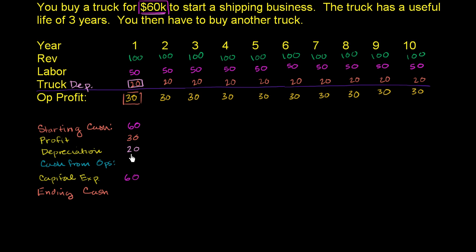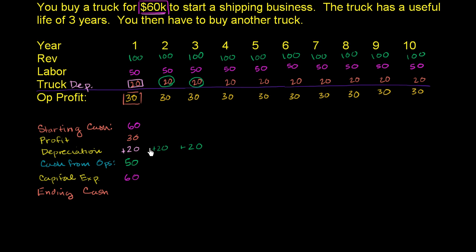To figure out the cash from operations — how much cash the operations are actually producing — we want to add back this depreciation to the profit. So our cash from operations is going to be $50,000. This $20,000 shown as an expense in every period: note that $20,000 did not actually go out the door in year two or year three. We're just spreading an expense from a previous year, so no cash went out. In any of these periods, the depreciation expense should be added back to the operating profit to figure out the cash from operations.